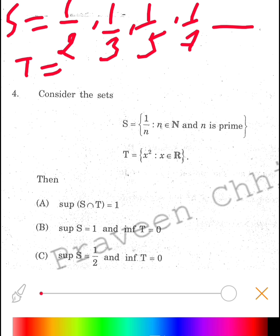Okay, now T will be equals to 0, 1, 4, 9, and so on. So first option is we have to take the intersection of S and T, and